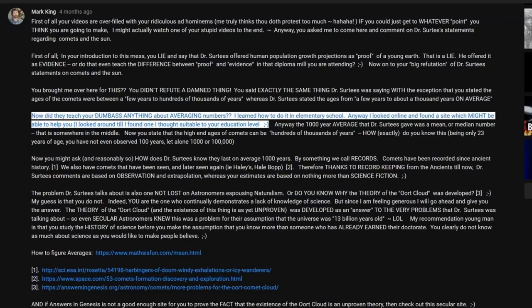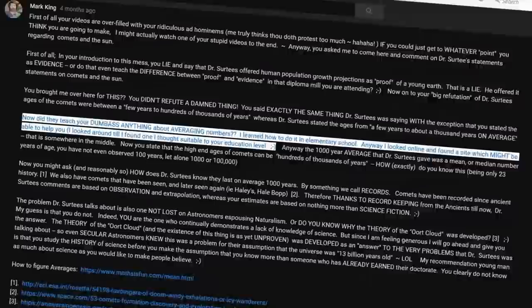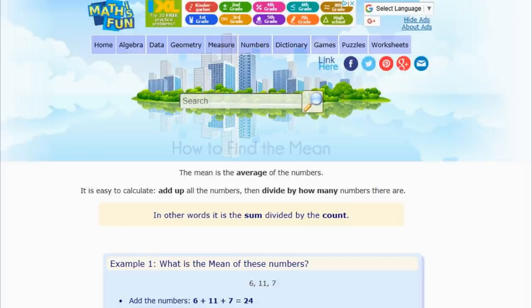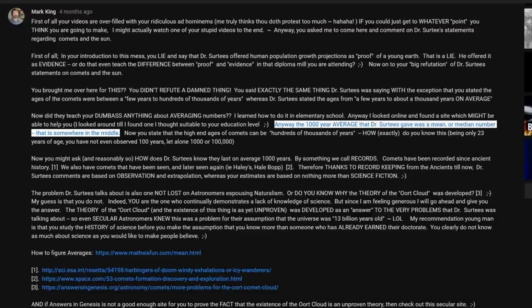Now, do they teach your dumbass anything about averaging numbers? I learned how to do it in elementary school. Anyway, I looked online and found a site which might be able to help you. I looked around till I found one I thought suitable to your educational level. Smiling winky face. The link he gave me is a website geared to teaching math to elementary school students. Cute. Anyway, the 1,000 year average that Dr. Surtees gave was a mean or a median number. That is somewhere in the middle.